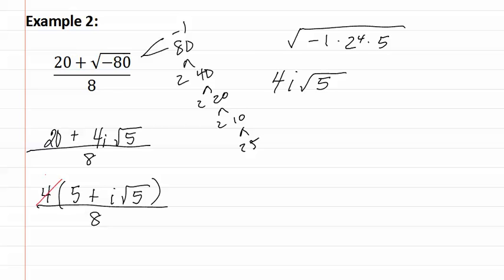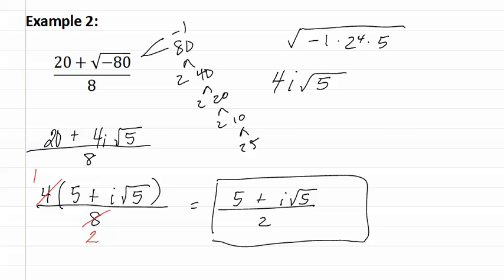We can now divide out the four, four goes into four once, four goes into eight twice. This gives us five plus i root five over two, which is our final answer.